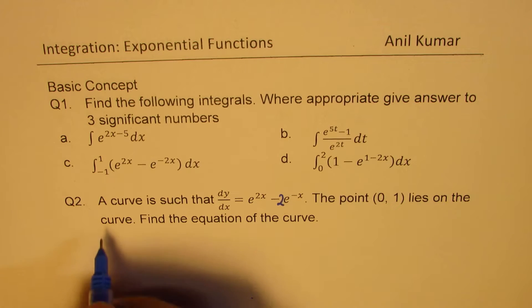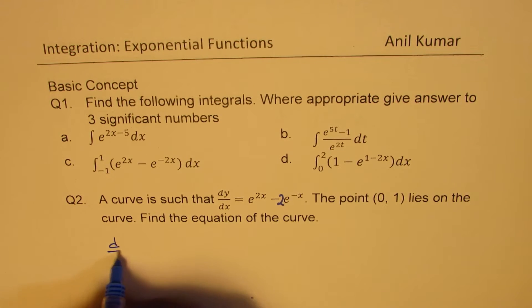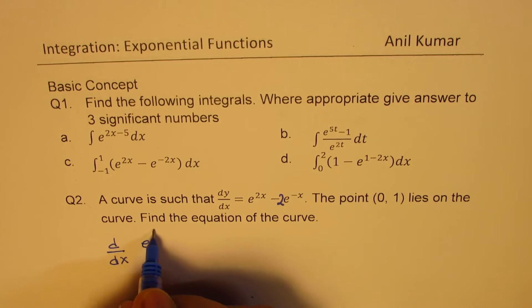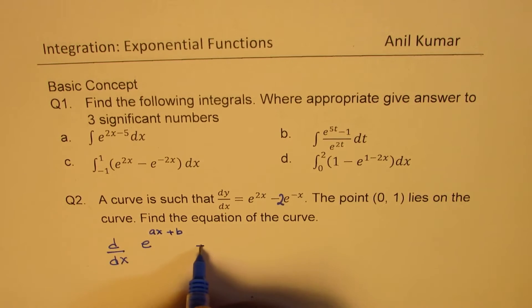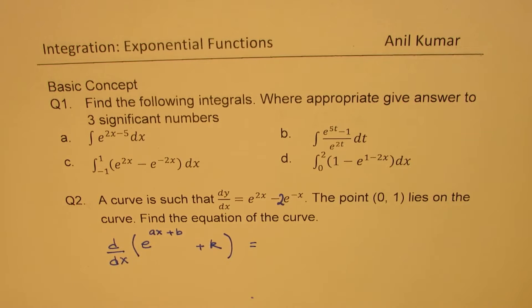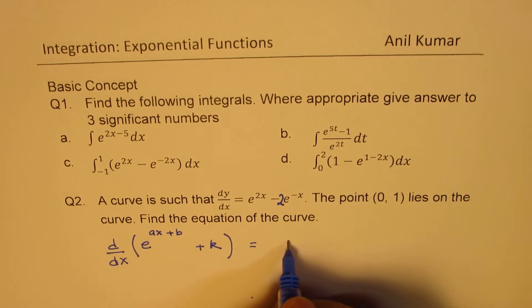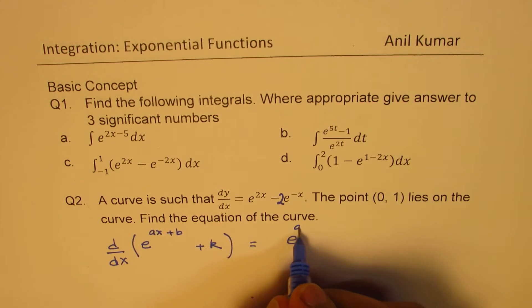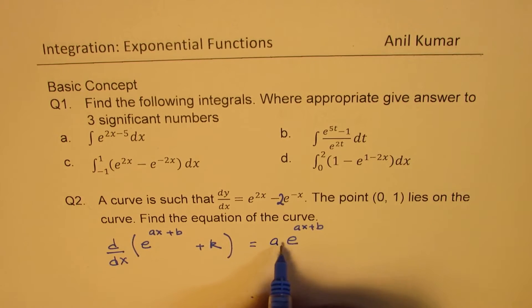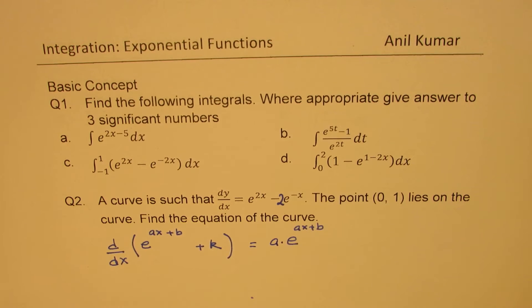The basic concept is that if you differentiate an exponential function — take a general form e to the power of ax plus b plus some constant k — if you differentiate this function, the derivative of the exponential function is exactly the same, so we get e to the power of ax plus b, and the derivative of the exponent gives a factor of a. The derivative of the constant is 0.